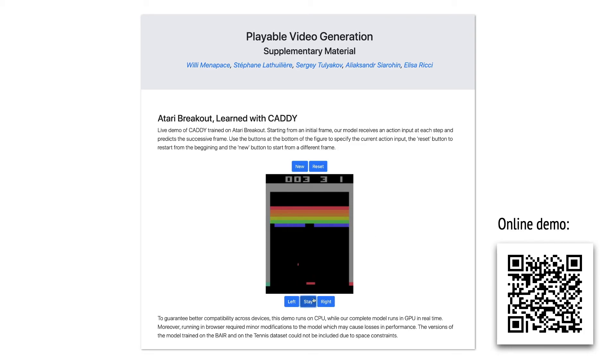First, we play breakout. There are three actions, move left, right, and stay. As the user presses the buttons, the platform moves accordingly. We can pick a different starting frame by clicking New.